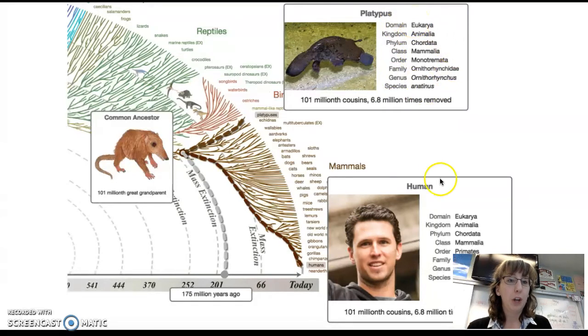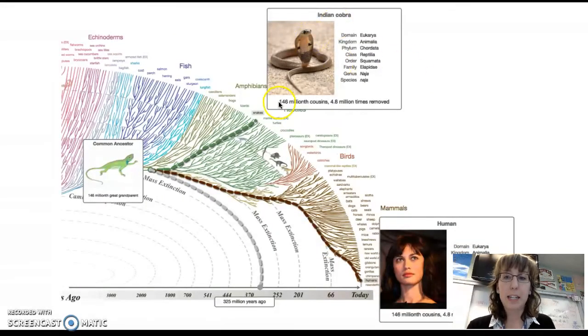Another thing to note, looking at the taxonomy, which we'll be looking at later, notice the similarities. We are in the same domain, kingdom, phylum, and class, but then we diverged at these more specific taxa. Here's another example, except with Indian cobras. This was probably somewhat looking like our common ancestor, again 146 millionth great-grandparent. So great great great great to the 146 millionth time. You can see how our taxonomy is similar. We share the phylum chordata, but after that we diverged, we branched apart. We had a branching point right here which led to our classifications being different.